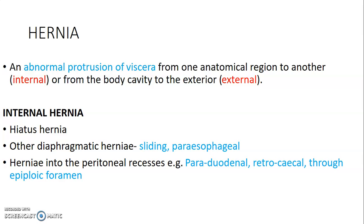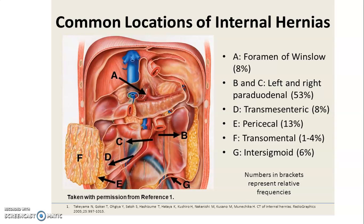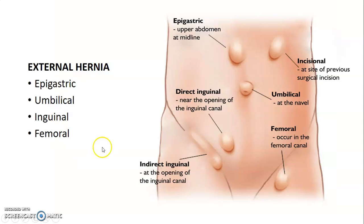A hernia is an abnormal protrusion of viscera from one anatomical region to another. It could be internal or external — from a body cavity to the exterior. Examples of internal hernias include hiatus hernia of the diaphragm and other oesophageal hernias at the diaphragm like sliding and para-oesophageal hernias. We also have hernias through peritoneal recesses like paraduodenal, retrocaecal, and through the epiploic foramen. You can also have transmesenteric hernias, pericaecal, and trans-omental hernias.